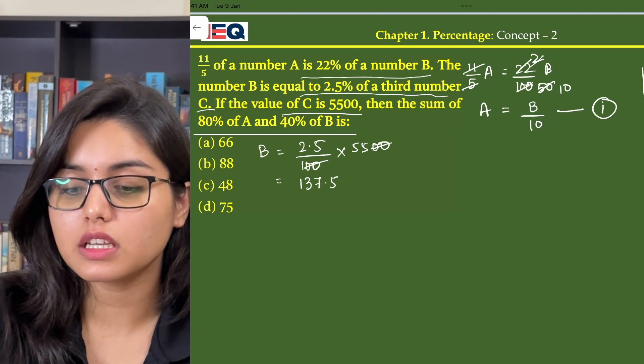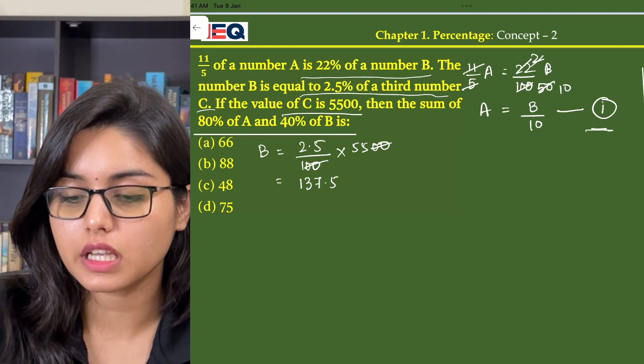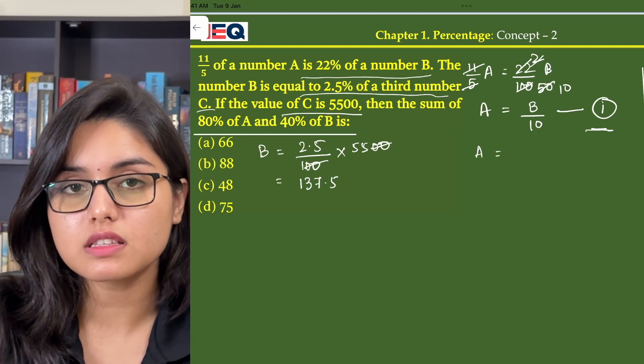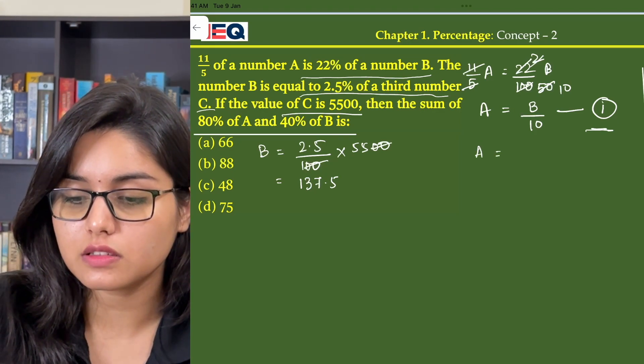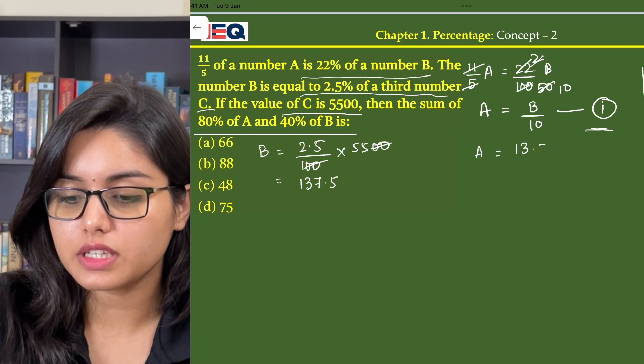Now putting the value of B in the first equation, we get A is equal to 137.5 by 10, that is 13.75.